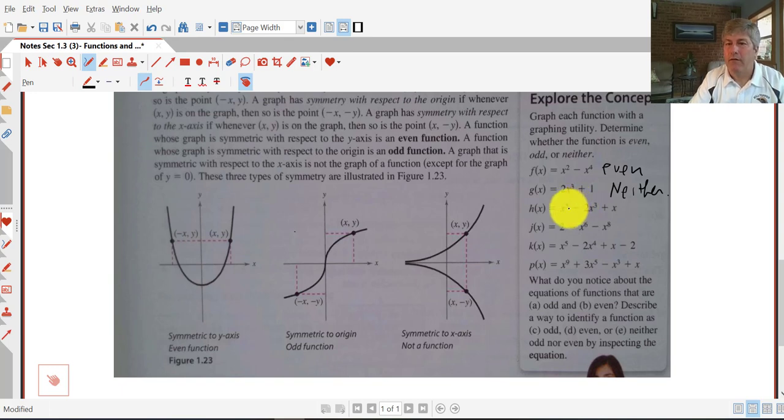The third one, we have all odd exponents, so that's going to be an odd function. The fourth one, these are all even exponents, that's going to be an even function.